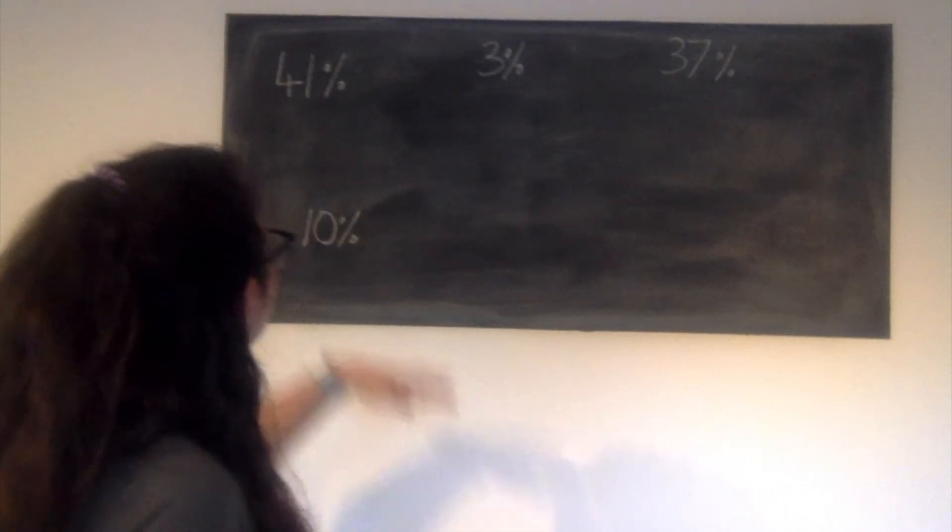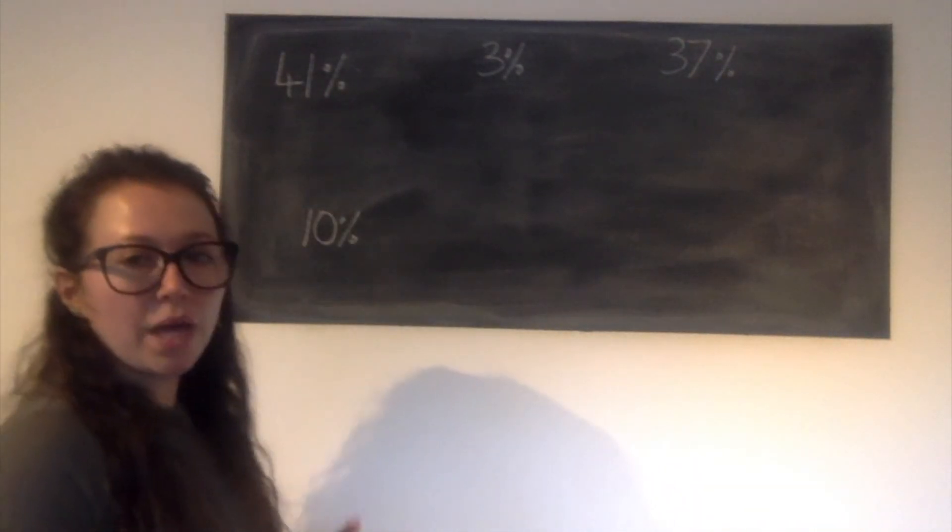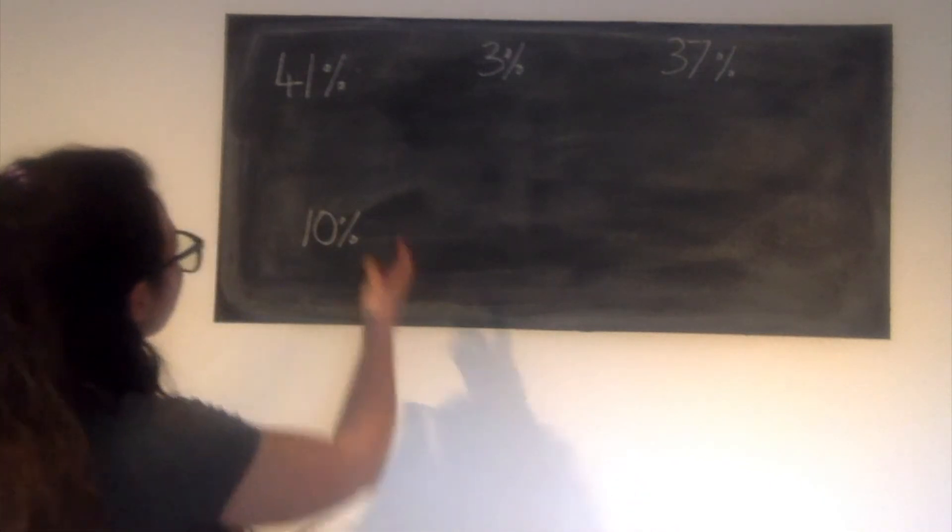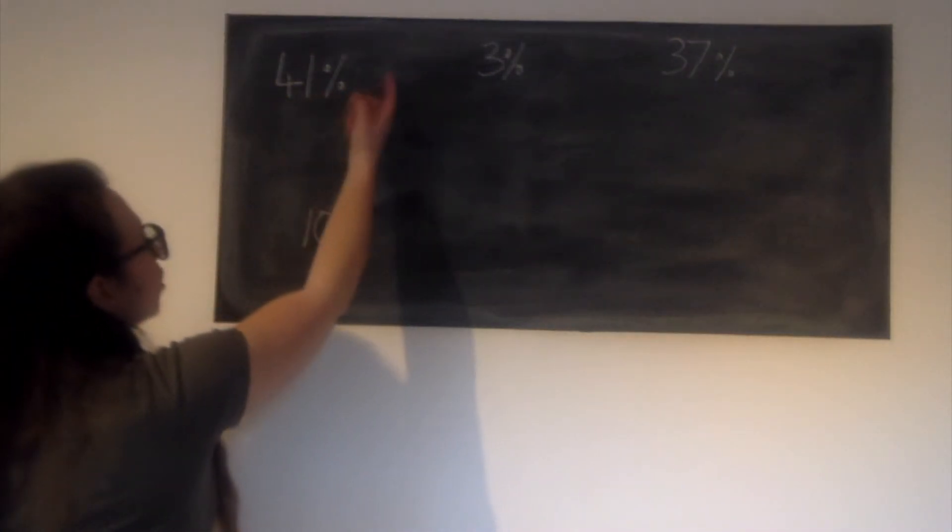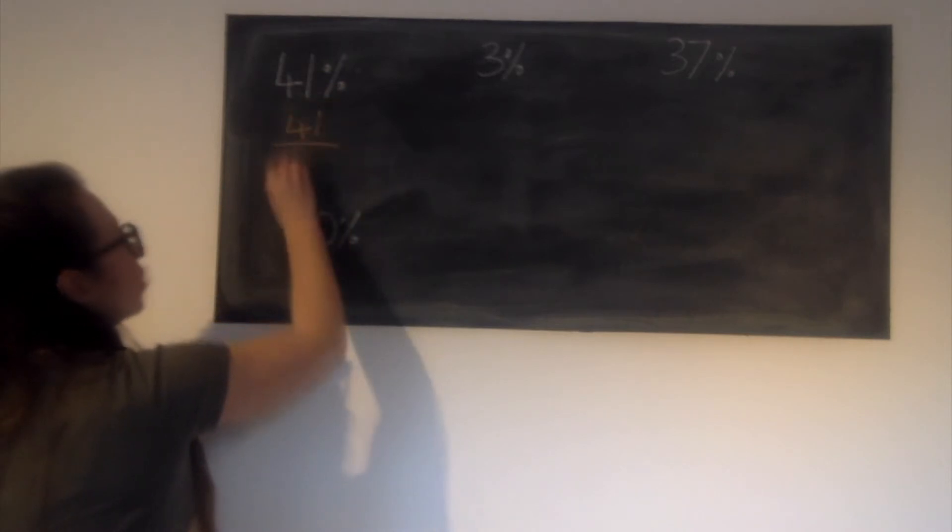Let's go through these. So the first one, 41%. Remember our denominator needs to be out of 100. 41 per 100. So 41 hundredths.